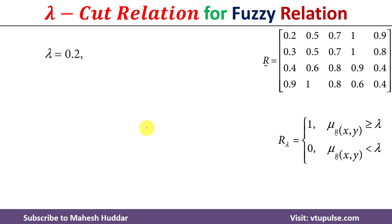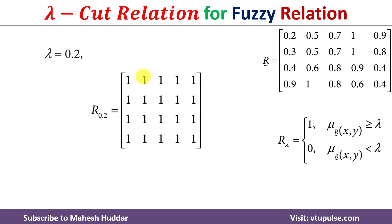Let's take an example where lambda equals 0.2. If you notice, the fuzzy relation contains 0.2 which is equal to the lambda value 0.2, hence the lambda cut relation contains 1. The fuzzy relation also contains 0.5 which is greater than 0.2, hence the lambda cut relation contains 1. Similarly, for the remaining values we get the answer as 1, 1, 1.